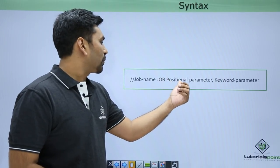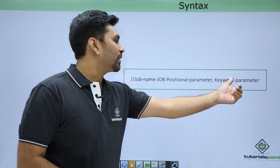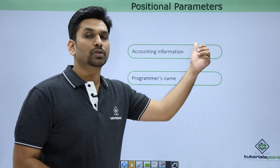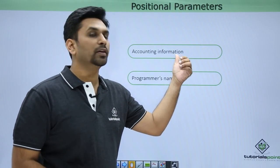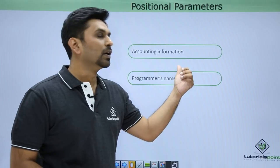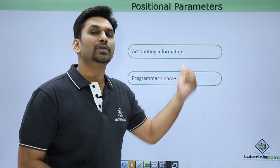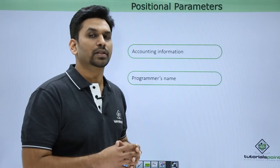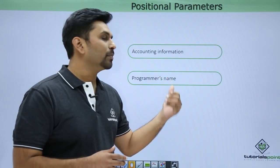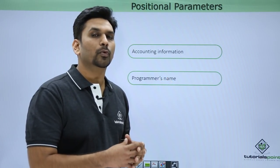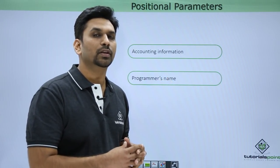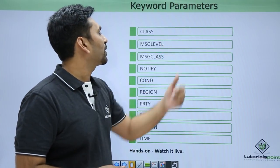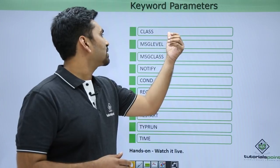After the keyword JOB come the positional parameters and keyword parameters. We have two positional parameters: one is accounting information and the other is programmer's name. Accounting information is related to billing and will be provided by your organization. Programmer's name identifies the person who has done the coding for the JCL.